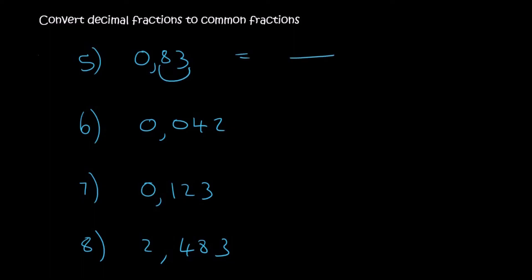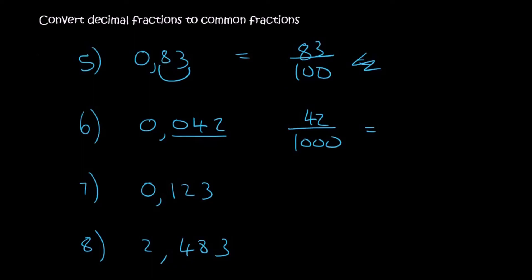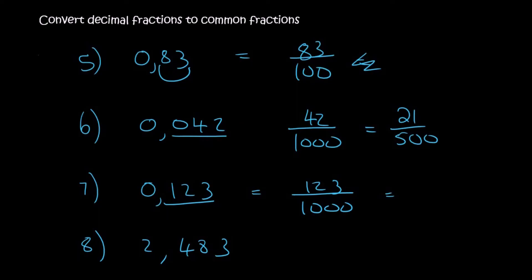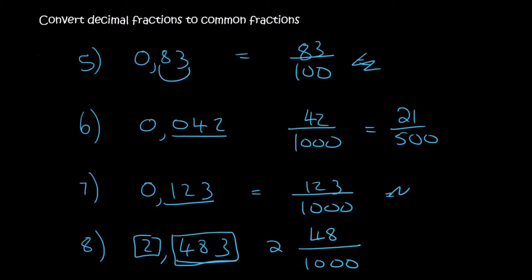Here are some more to try. For 0.83 — two decimal places — that's 83 over 100, and this one doesn't simplify further, so that is the answer. For 0.042 — three decimal places — that's 42 over 1000, which simplifies to 21 over 500. For 0.123 — three decimal places — that's 123 over 1000, and that doesn't simplify either. For 2.483 — three decimal places — the 2 stays in front and 483 over 1000 doesn't simplify, so the answer is 2 and 483 over 1000.